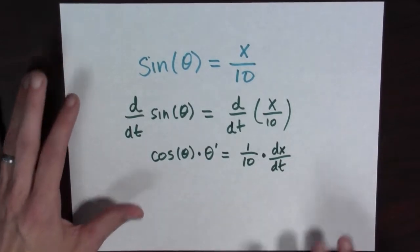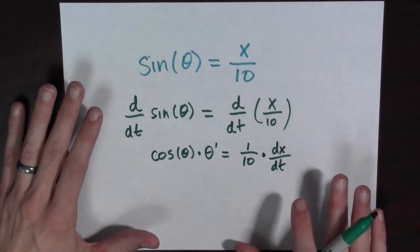And this is equal to, well, it's equal to one tenth times dx over dt. And dx over dt, well, let's wait till the next step to say something about that.